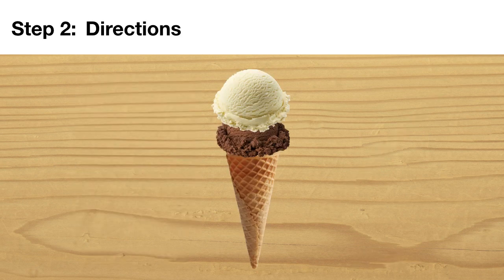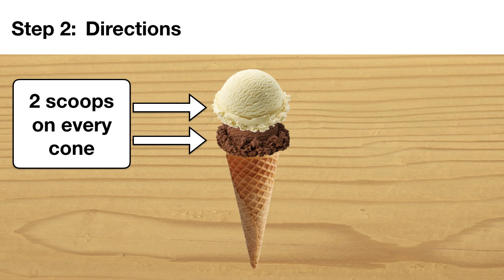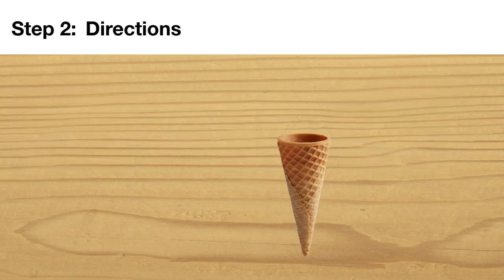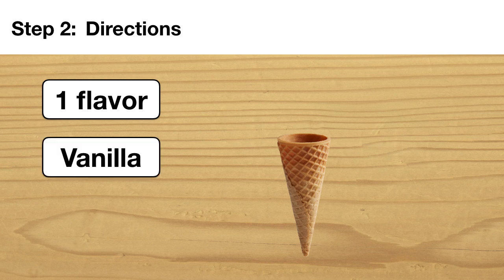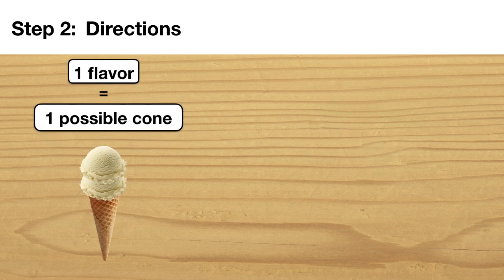Step two. Let's go over the directions. Remember that there are exactly two scoops of ice cream on each cone. These scoops can be either the same flavor or they can be different flavors. For example, if my store only had one flavor, let's say only vanilla, then my only option would be to have this cone with two scoops of vanilla. There would be only one possible cone.